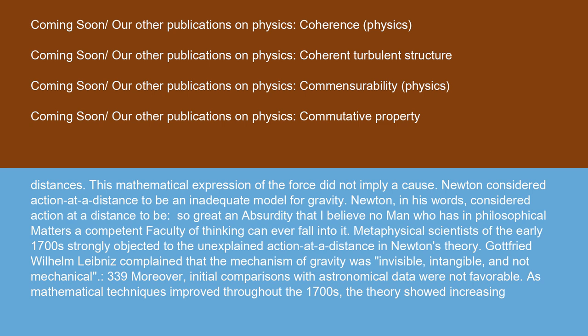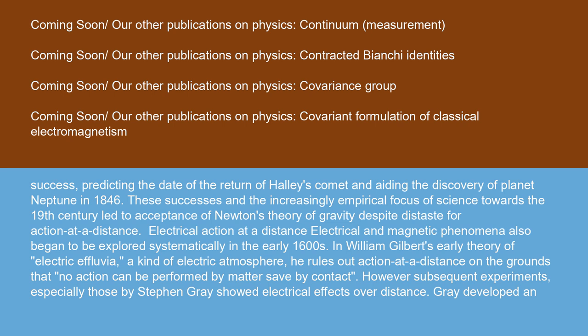Metaphysical scientists of the early 1700s strongly objected to the unexplained action at a distance in Newton's theory. Gottfried Wilhelm Leibniz complained that the mechanism of gravity was invisible, intangible, and not mechanical. Moreover, initial comparisons with astronomical data were not favorable. As mathematical techniques improved throughout the 1700s, the theory showed increasing success, predicting the date of the return of Halley's Comet and aiding the discovery of planet Neptune in 1846. These successes and the increasingly empirical focus of science towards the 19th century led to acceptance of Newton's theory of gravity despite distaste for action at a distance.